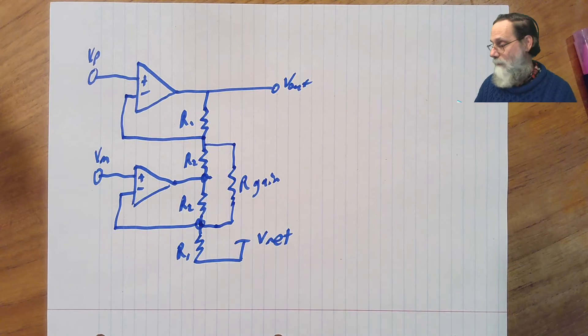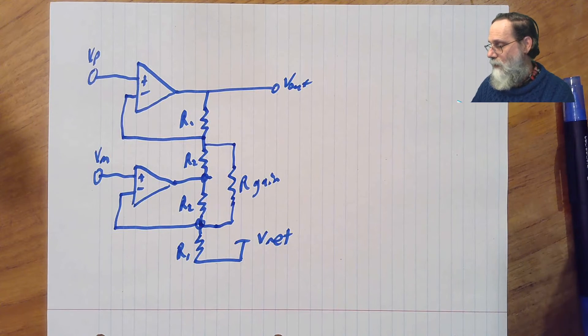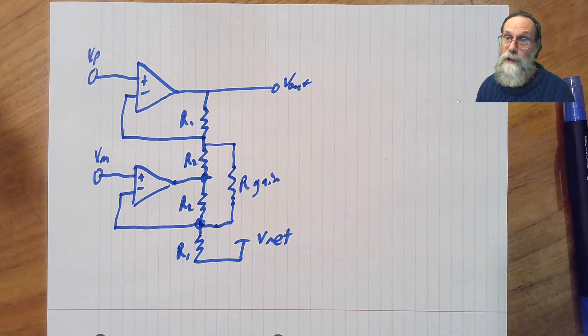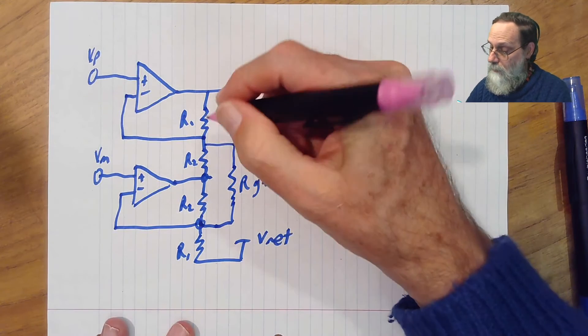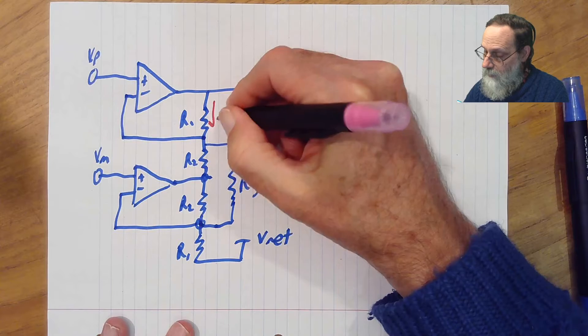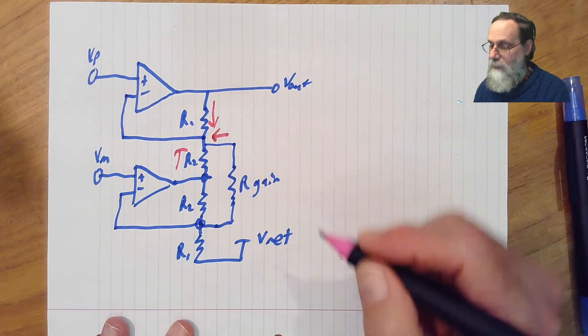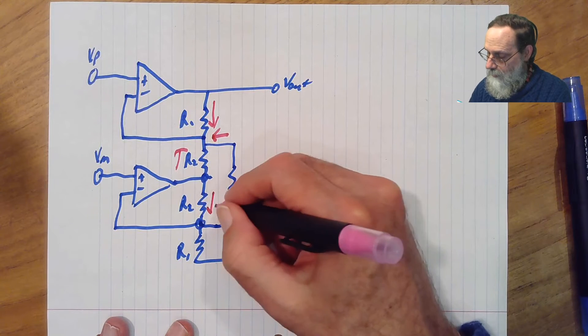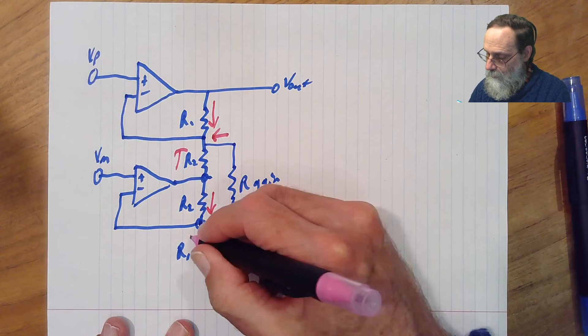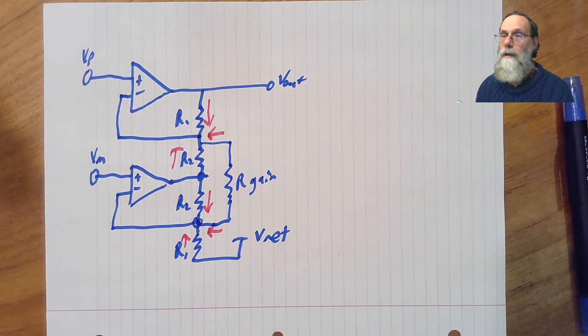But there's a solution. And the solution is a fairly simple one, we're just going to go back to first principles, use Kirchhoff's current laws. And so what we've got is that the current into this node and the current into this node have to sum up to zero.